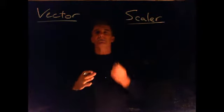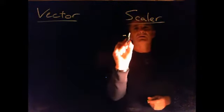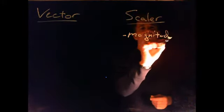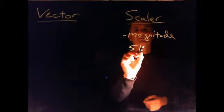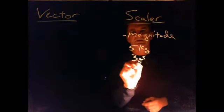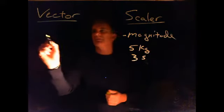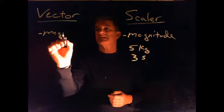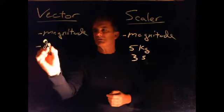A vector has two pieces of information while a scalar only has one. The scalar is simply a magnitude, meaning it's the how much. Something like mass, five kilograms, is a magnitude. Time, three seconds, is just a magnitude. A vector, as we were told, has magnitude. That's the how much.